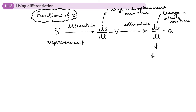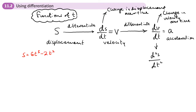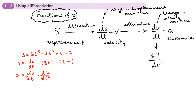Another way of writing this: you take your displacement and differentiate it twice. Here's an example — if displacement s = 6t³ - 2t² + t - 7, then velocity is the derivative: 18t² - 4t + 1. The acceleration is the second derivative of displacement with respect to time: 36t - 4.